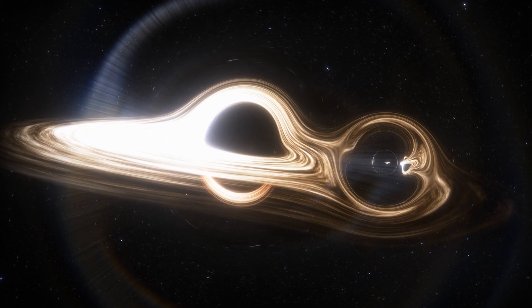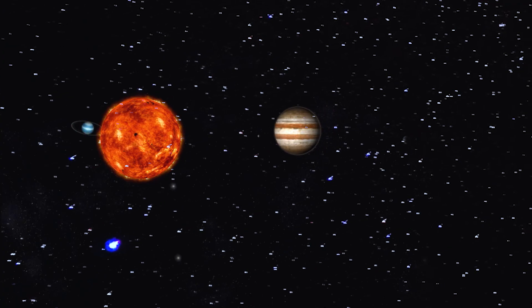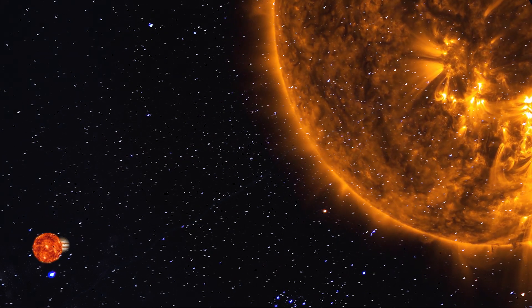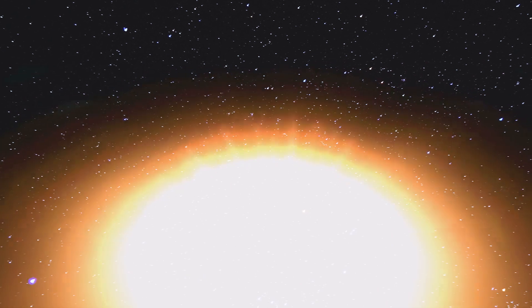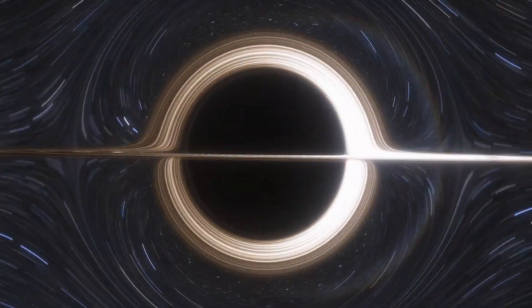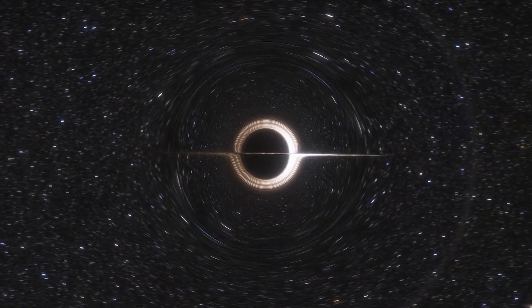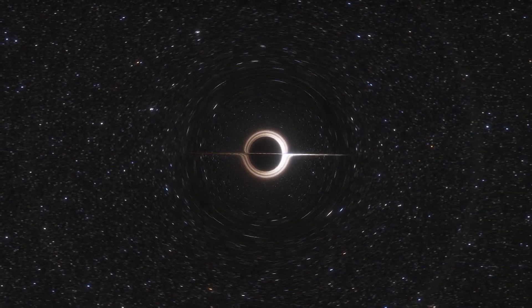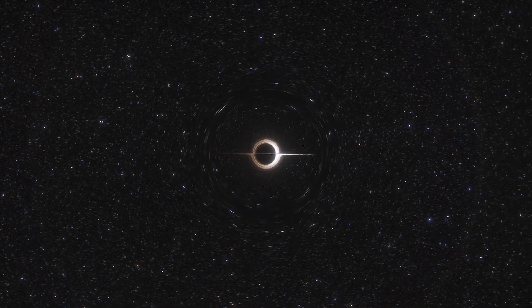Scientists believe that most black holes form after a giant star that's at least 10 times as massive as our sun runs out of fuel and collapses. The star basically shrinks until it forms a tiny, dark point. This is known as a stellar mass black hole. While much smaller than the star that made it, the black hole maintains the same mass and gravity.